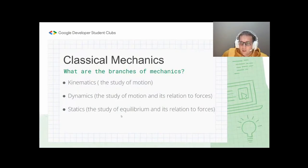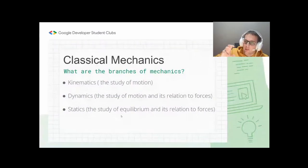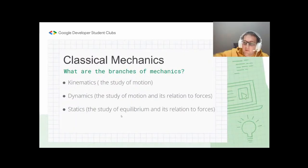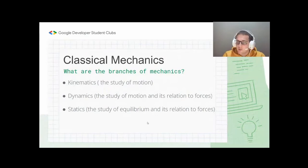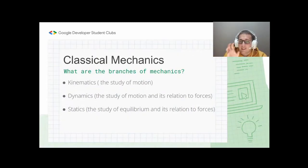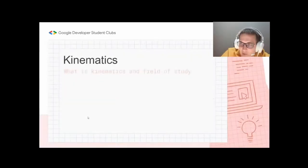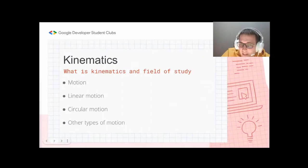Kinematics describes motion with formulas without asking why. Dynamics also studies motion but cares about the cause — which can be force. When we apply force to an object, it may start moving. Dynamics gets into those reasons; you probably studied Newton's laws in high school — that will be a future event. Statics is the study of equilibrium and its relation to forces — it studies the balance between forces, so objects remain static because forces are applied in opposite directions.